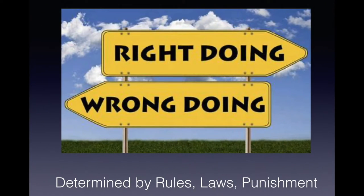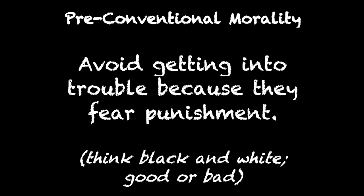Level one is pre-conventional morality. This means right or wrong — everything is determined by rules, laws, and punishment. The behavior is driven based on fear of punishment, so this is a fear-based model of morality and everything is black or white. For example: was it wrong to steal that loaf of bread to feed your starving family? Yes! They are going to jail because they stole the bread — that's what a five-year-old child would say, because they are functioning on pre-conventional morality.